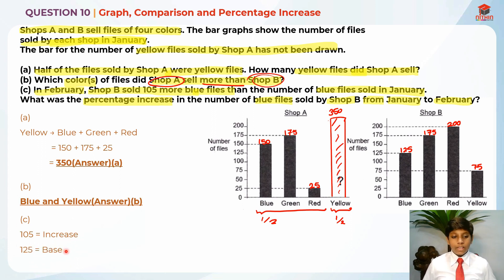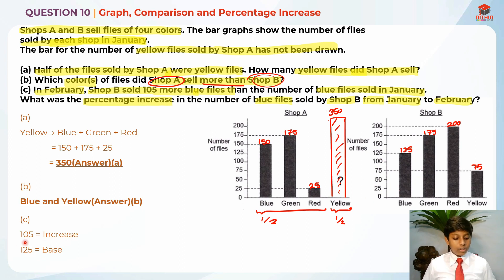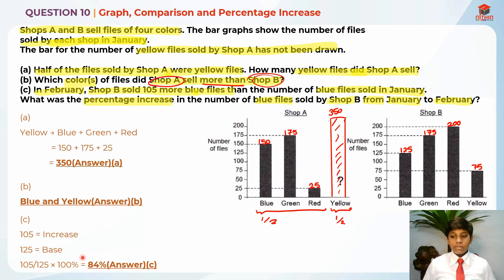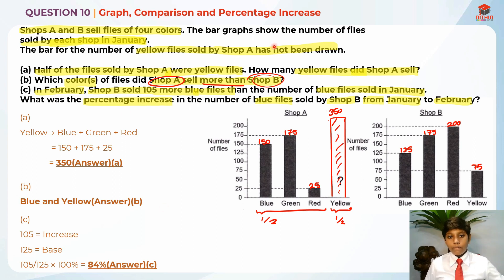So 125 is the base because January is the base. In order to find percentage increase, it's increase over base times 100%. So it's 105 over 125 times 100%, which gives us 84% as the answer for part C. I hope you understood my explanation for question 10 — graph comparison and percentage increase.